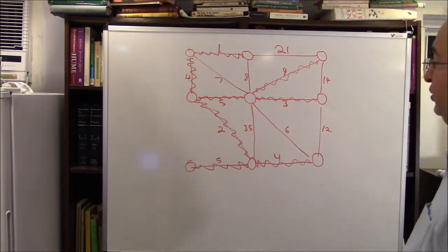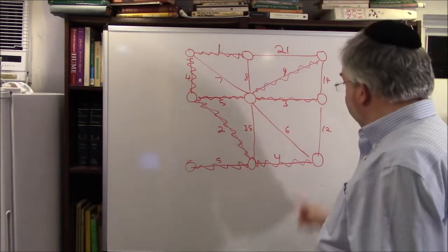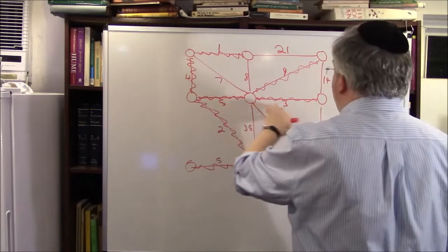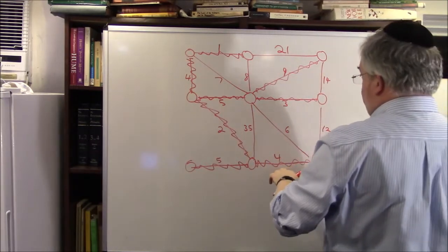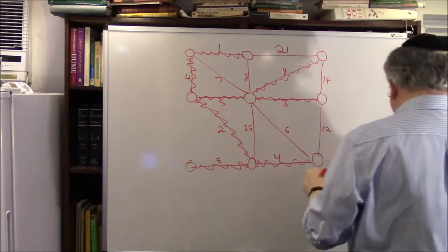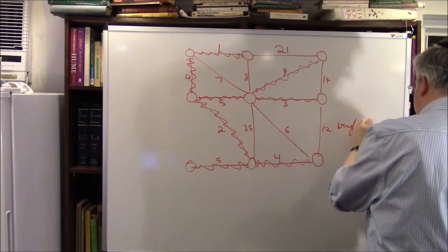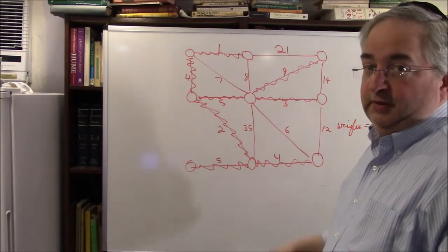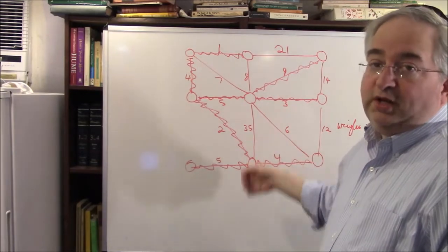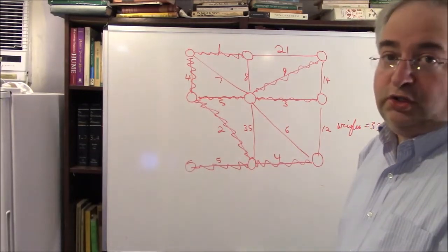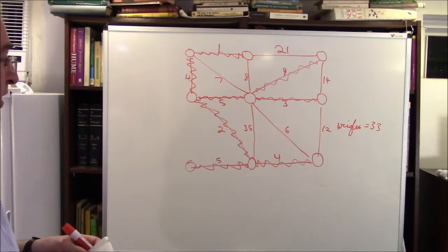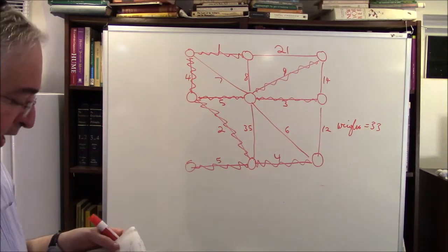Every single vertex is hit, there is no cycle here, and the weight — if you add up one plus four plus five plus three plus nine plus four plus two plus five — you get a weight of 33. Now you could find another tree of weight 33, but you're not going to find a tree of weight 32. The minimum tree is not unique, but the minimum weight is unique.